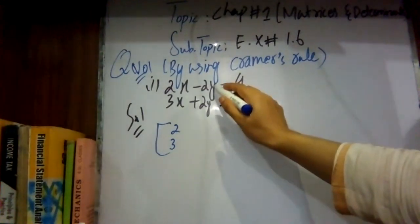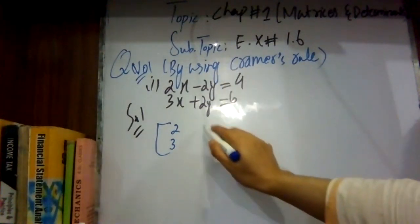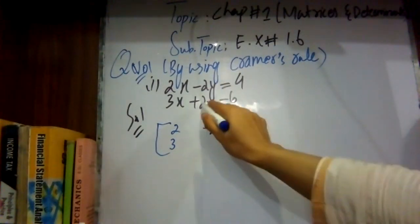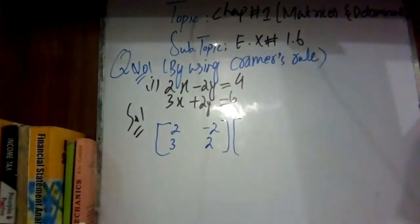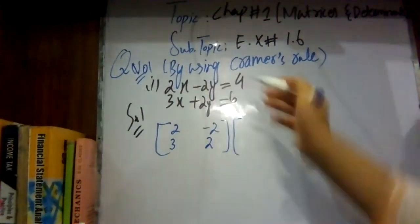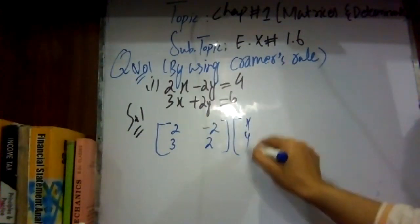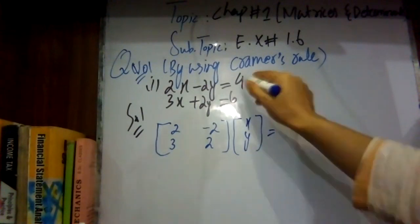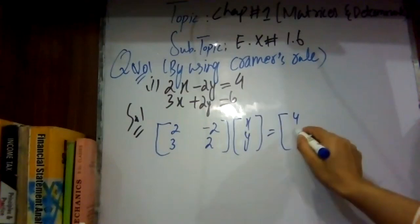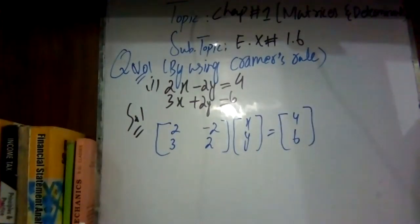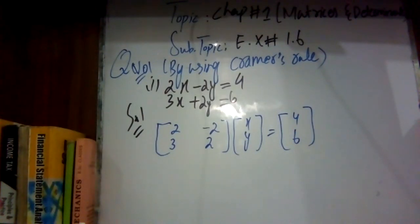Then write down the coefficients of y. In the first equation, the coefficient of y is minus 2, and the coefficient of y in the second equation is 2. Then write down the unknown variables, which are x and y. After the equals sign, write down the constant terms in sequence: 4 and 6. Is it clear to everyone?